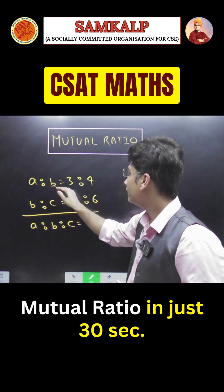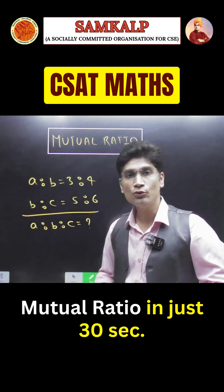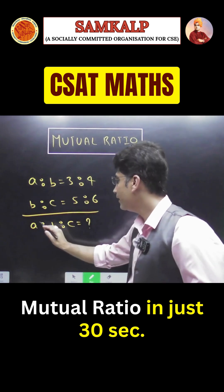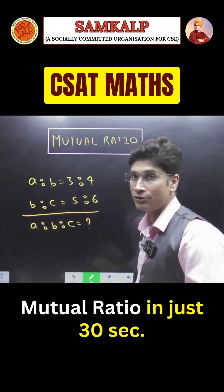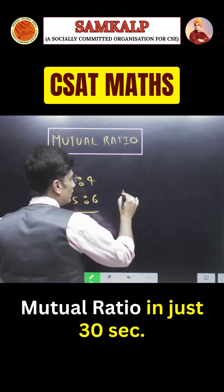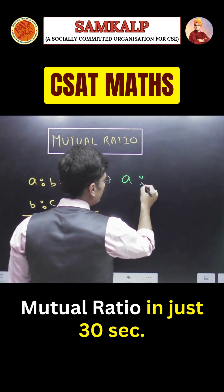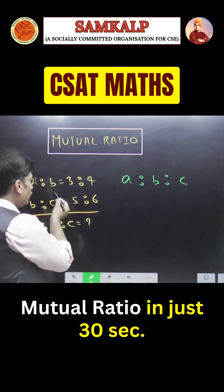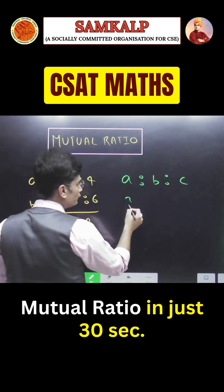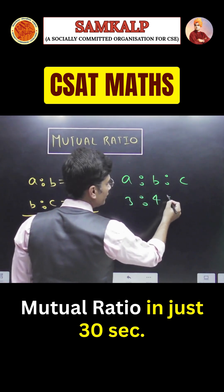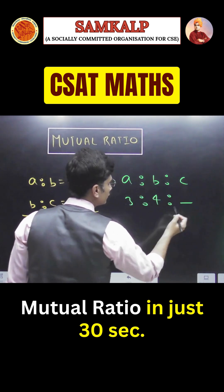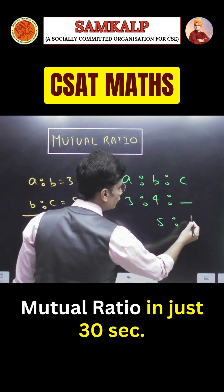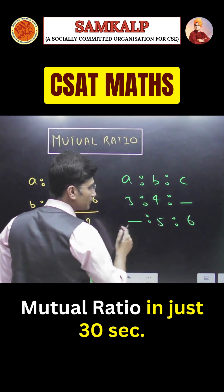When it is given that A is to B equal to 3 is to 4, B is to C is 5 is to 6, and they want you to calculate A is to B is to C mutually — first of all you have to write down A, B, and then C. For A is to B, it is 3 is to 4; we don't have C here, keep a blank space. For B and C, write down 5 is to 6; we don't have A here, keep a blank space.